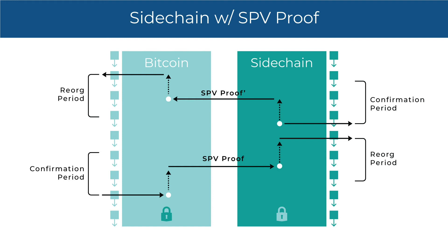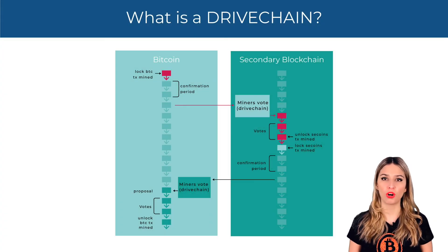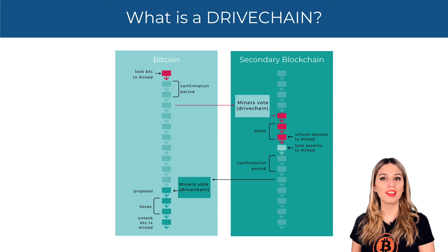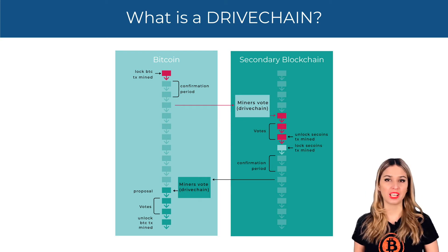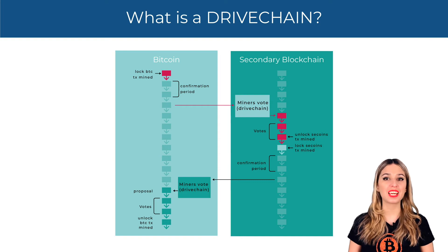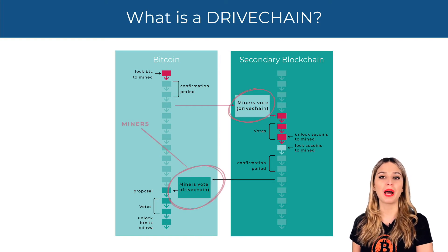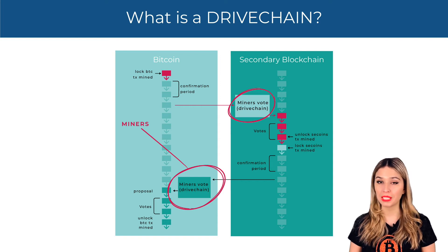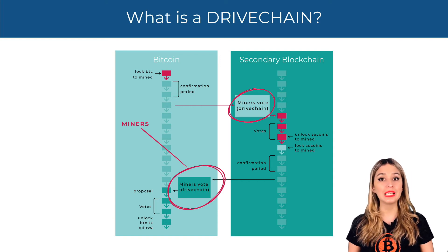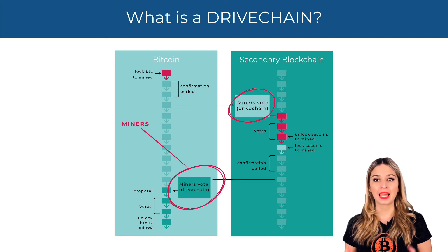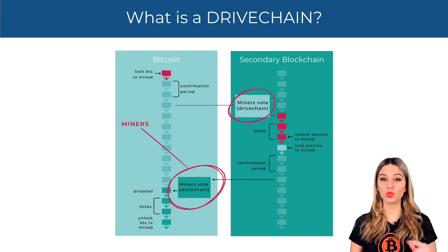However, today SPV proof-based pegs do not work with Bitcoin yet — we cannot apply this on the Bitcoin side yet. Up next we're going to analyze the last concept of the video: what a drivechain is. The difference between a sidechain and a drivechain is that a drivechain gives custody of the unlocked coins to miners, who are allowed to vote algorithmically on whether to release or lock the funds. These miners vote using the main chain.